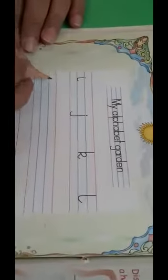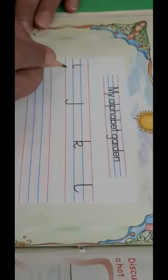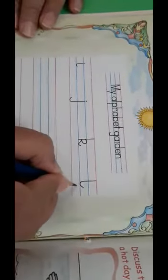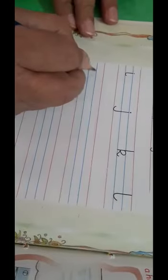Now children, this letter is E Igloo, J Joker, K Kite and L Leg. And see children,